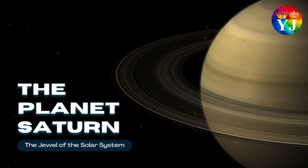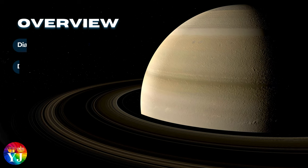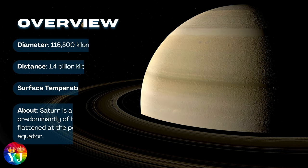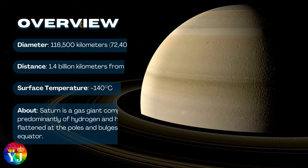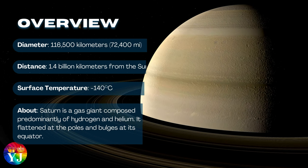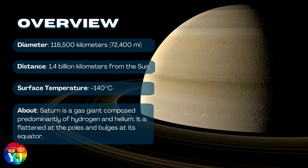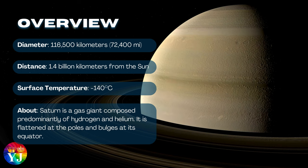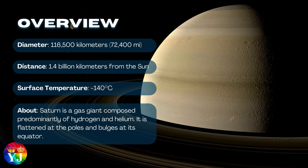The planet Saturn, the jewel of the solar system. Overview of Saturn: Diameter 116,500 kilometers, Distance 1.4 billion kilometers from the Sun, Surface temperature minus 140 degrees Celsius.